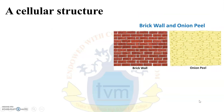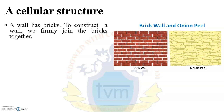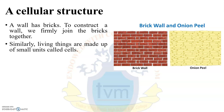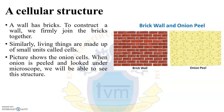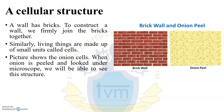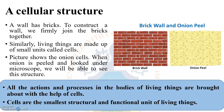The last characteristic is a cellular structure. Observe the picture alongside very carefully. Just as a wall is made up of bricks joined firmly together, similarly living things are made up of small units called cells. The picture shows onion cells — when onion is peeled and looked at under a microscope, we can see this kind of structure. All actions and processes in the bodies of living things are brought about with the help of cells. Cells are the smallest structural and functional unit of living things.